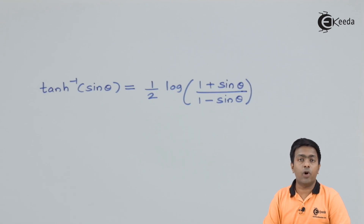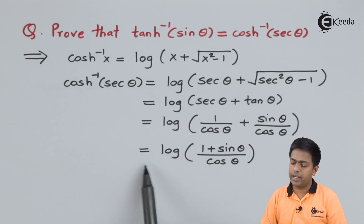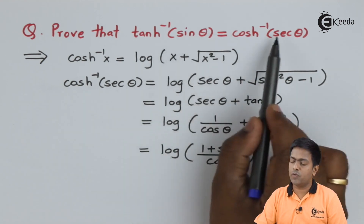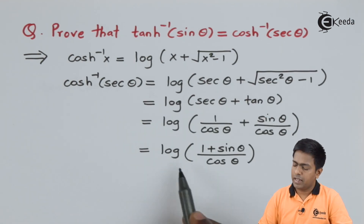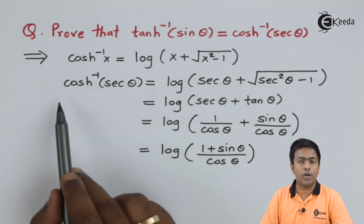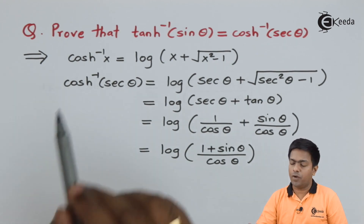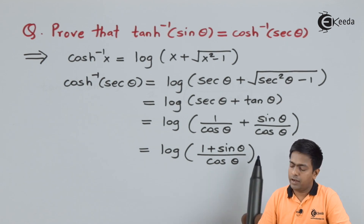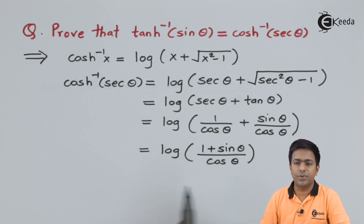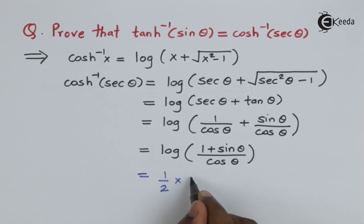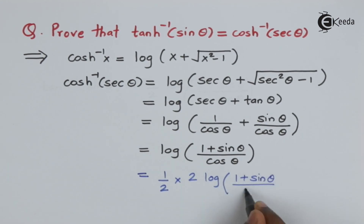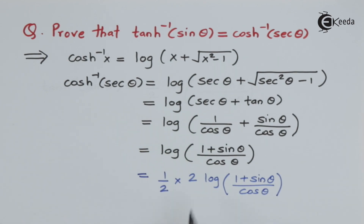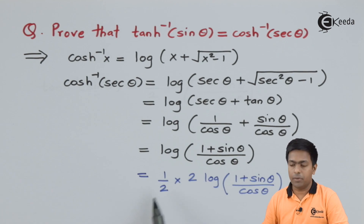This is the value from the left hand side. Observing the right hand side, we got log[(1 + sin θ)/cos θ] without the half factor. To match both sides, I'll further simplify cosh⁻¹(sec θ) by multiplying and dividing the log term by 2. Using the log power property b·log a = log(aᵇ), the 2 goes into the power, giving ½ log[(1 + sin θ)/cos θ]².